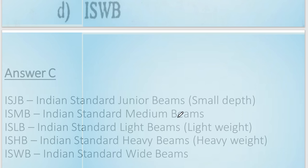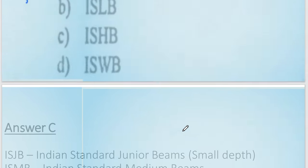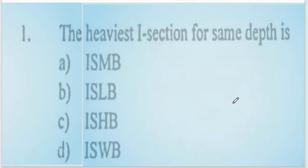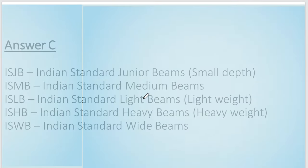We are looking at ISLB. ISLB stands for Indian Standard Light Beam, used for very heavy weight transfer. ISHB is the Indian Standard Heavy Beam, so we use ISHB for heavy loads. If you want to use a wide beam, you can use Indian Standard Wide Beam. For the same depth, the heaviest section is the Indian Standard Heavy Beam. Option number C is correct.